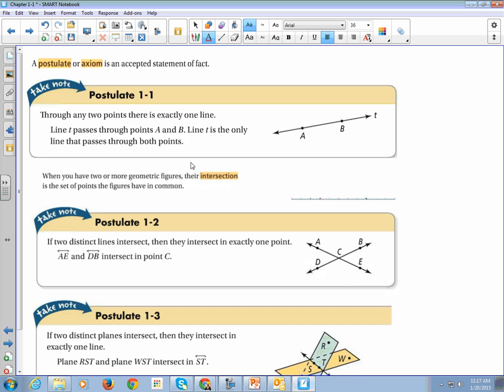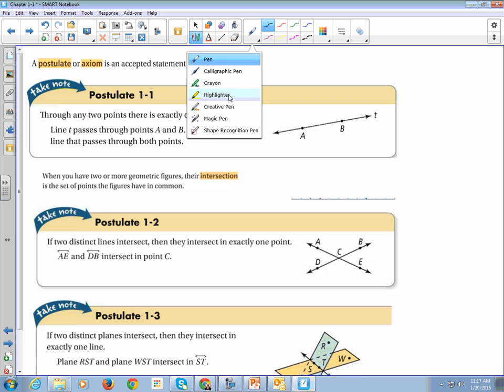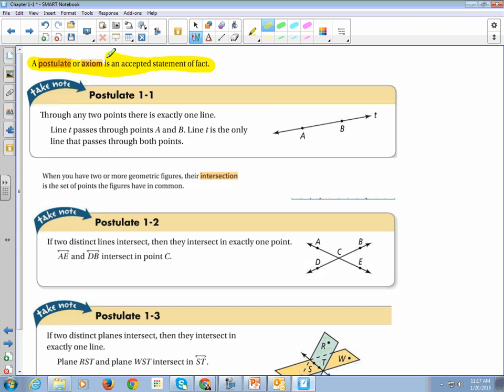Alright, so here's some definitions. A postulate or an axiom is an accepted statement of fact. It's something that we don't have to prove. It just is. So for example, postulate 1-1, through any two points, is exactly one line. Two points? There's only one line that passes through.